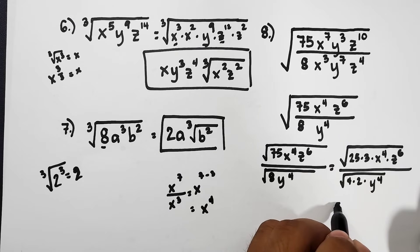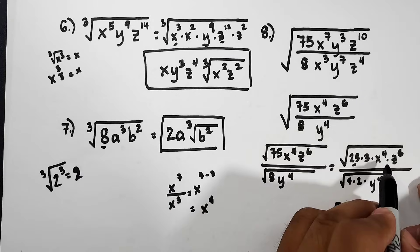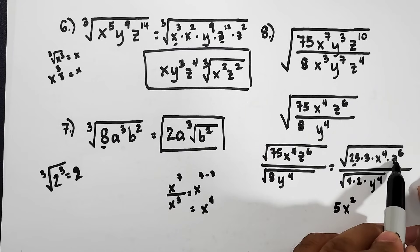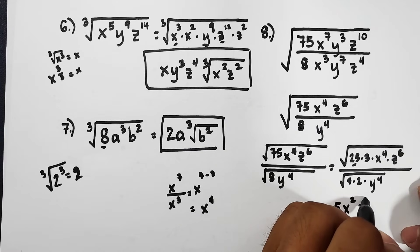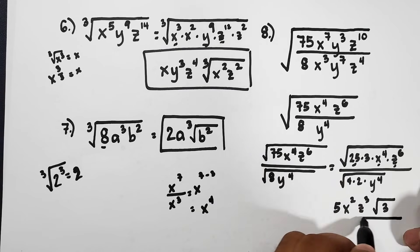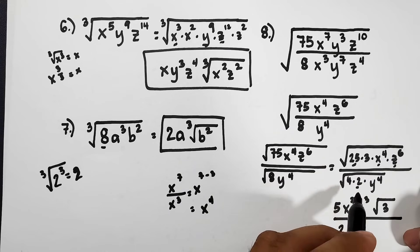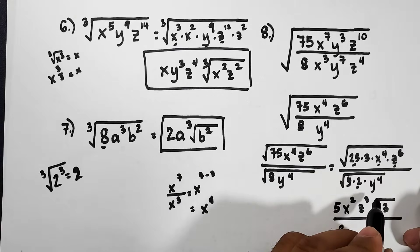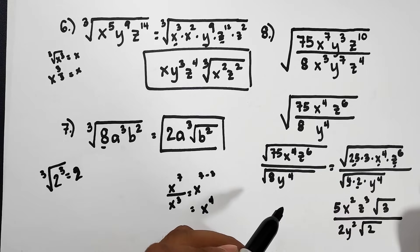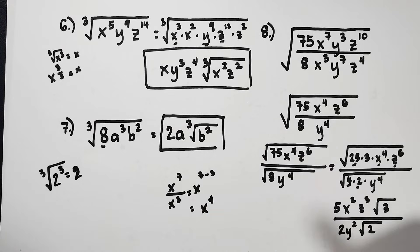Now extracting the square roots: the square root of 25 is 5; the square root of 3 is not a perfect square so it stays inside; the square root of x to the 4th is x squared; the square root of z to the 6th is z cubed. In the denominator, the square root of 4 is 2, the square root of 2 stays inside, and the square root of y to the 4th is y squared. This gives us 5x²z³√3 over 2y²√2, but we still need to rationalize the denominator.